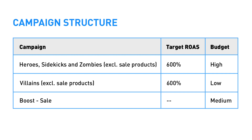In this example, the target ROAS for the labelizer campaigns is set to 600%. For the boost campaign there is no target ROAS, because we want to give Google's algorithm full space to get results without being constrained by a ROAS target. The budget division is as follows: you want to boost your well-performing products and make sure the bad-performing products don't steal your budget. So we give the Heroes, Sidekicks, and Zombies campaign a high budget, and the Villains campaign a low budget.